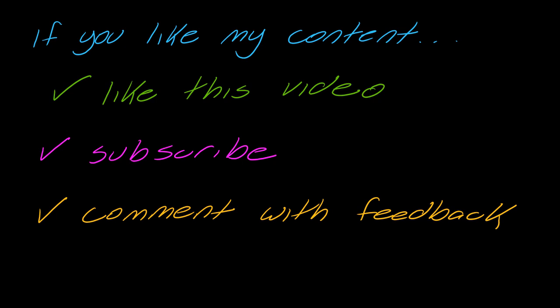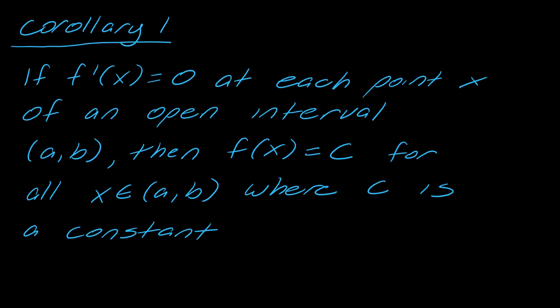So you should already know the mean value theorem. Now I'm going to show you two corollaries. A corollary just means a consequence of a theorem. So the first corollary is this: if f prime of x equals zero at each point x of an open interval from a to b, then f of x equals c for all x in a to b, where c is a constant.